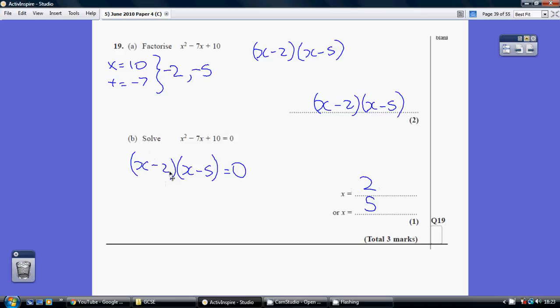Well x would be 2. Or alternatively how could we make the second bracket 0? x would be 5. So our solutions are x equals 2 or x equals 5.